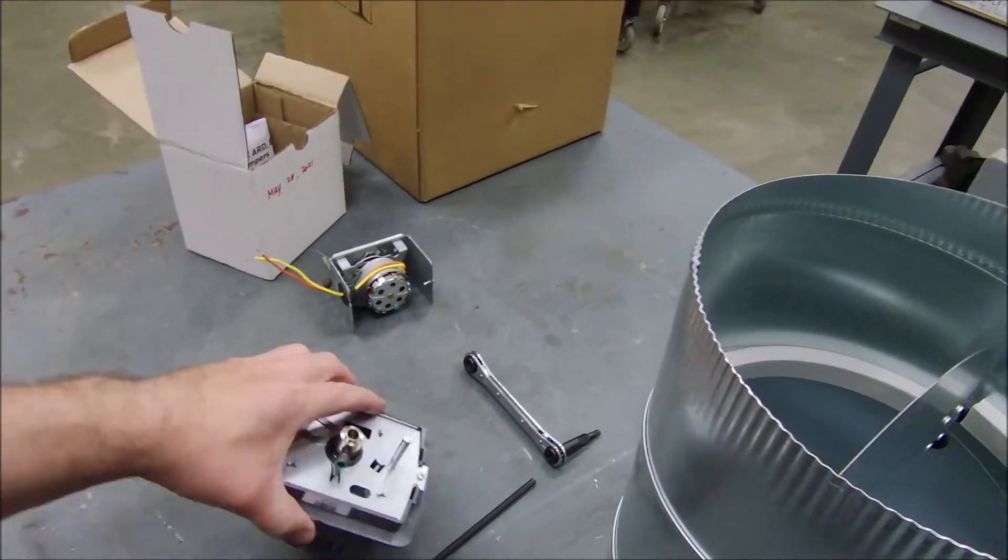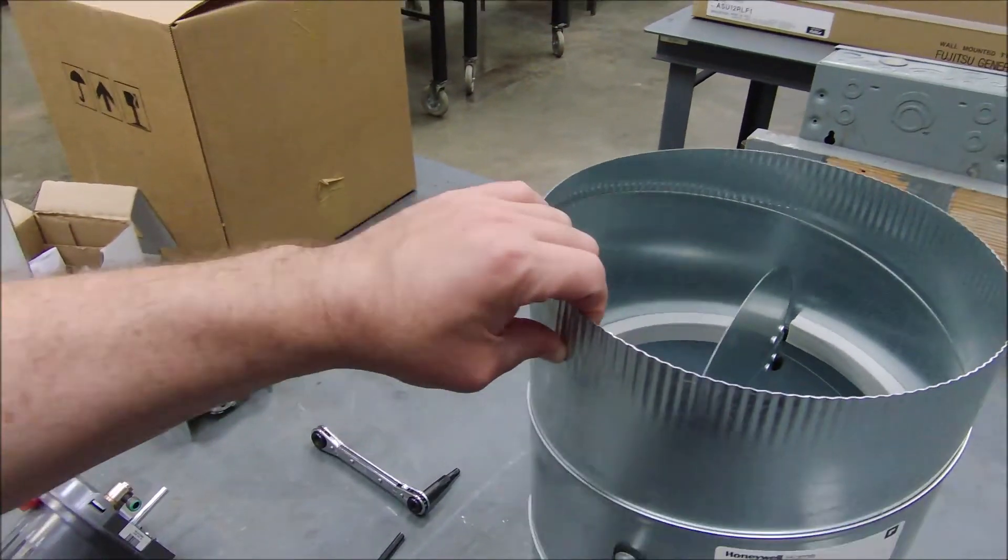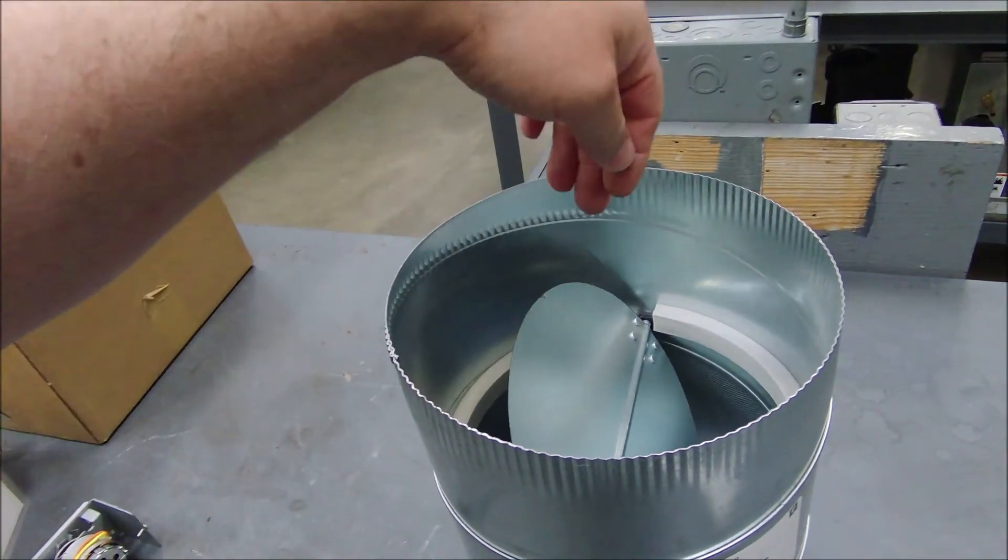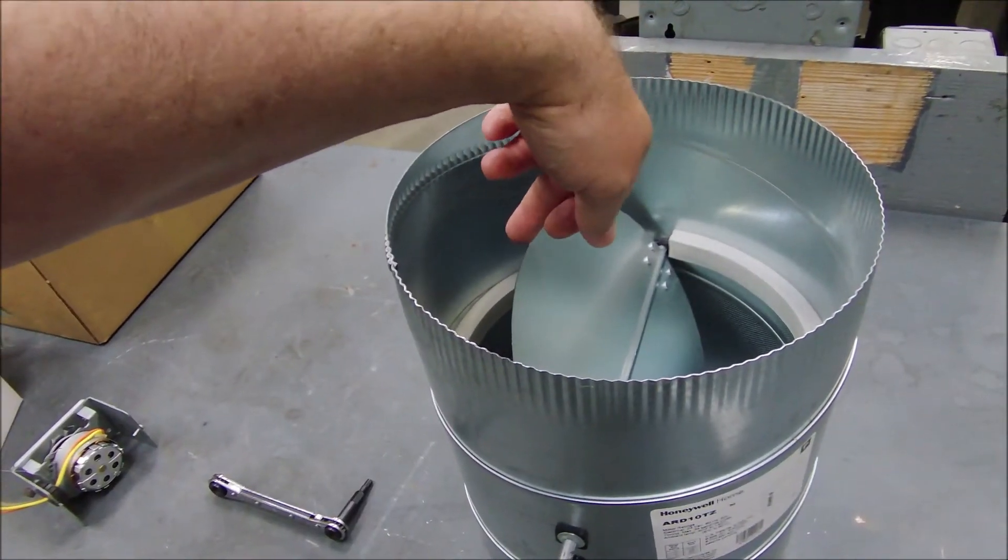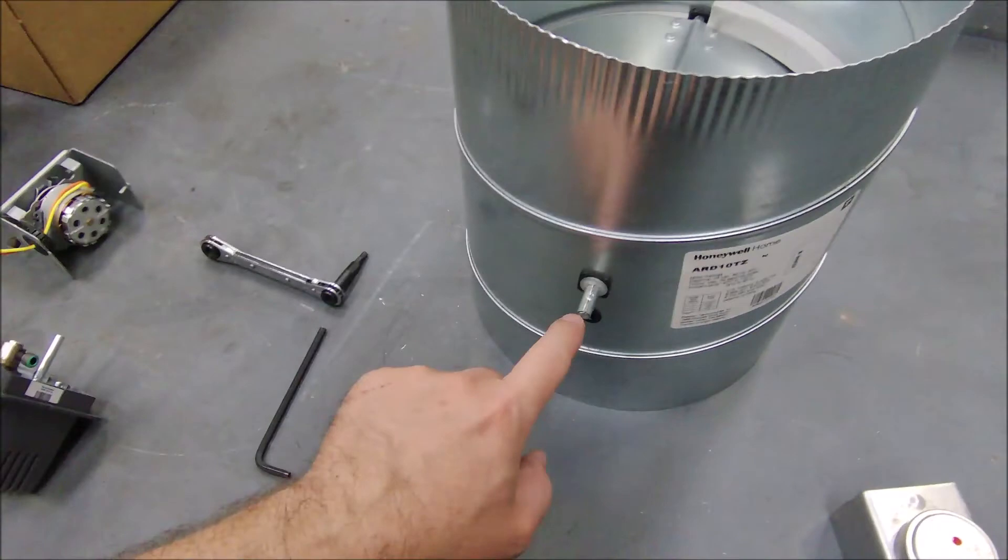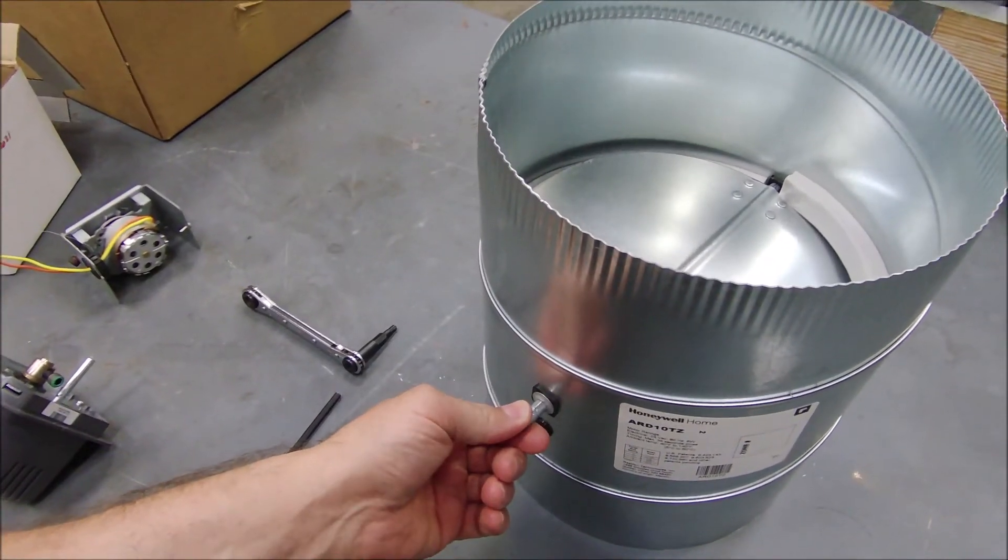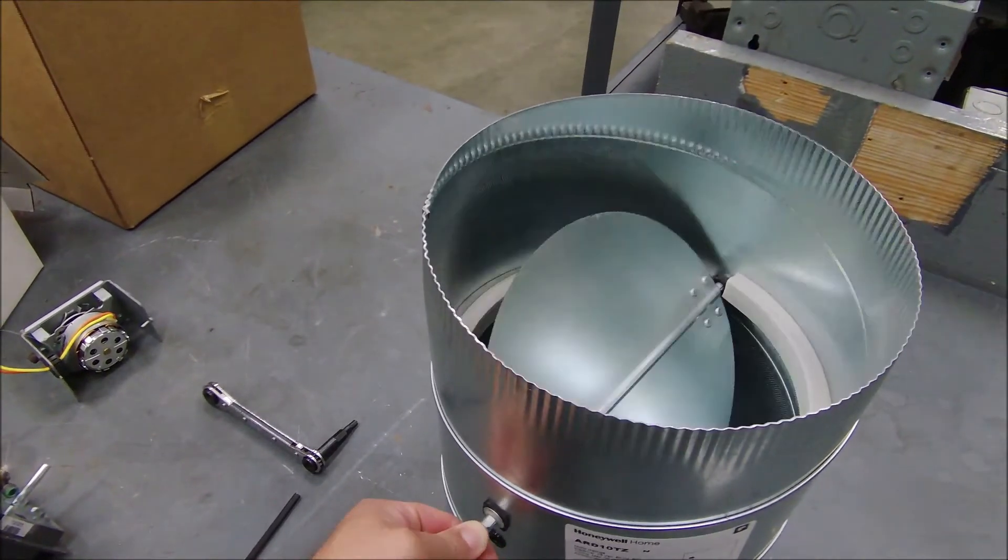It's not going to stay if you try to open it with your thumb because it's got a spring that's trying to open it. When you go out in the field and you replace one of these, you need to make sure that that damper itself is open. If you put that actuator back on the shaft and you can see where that set screw was here on this brand new damper.